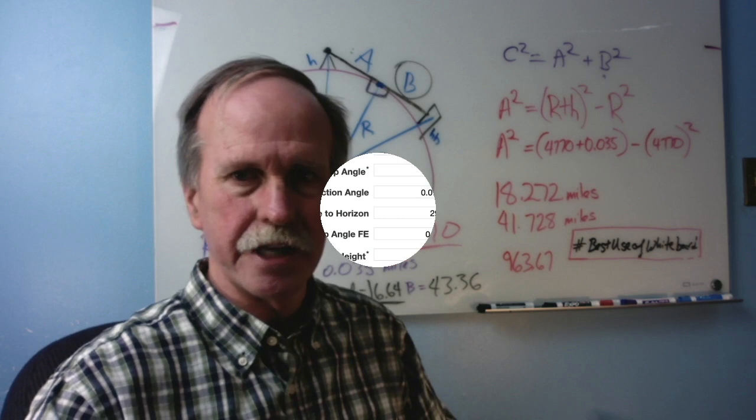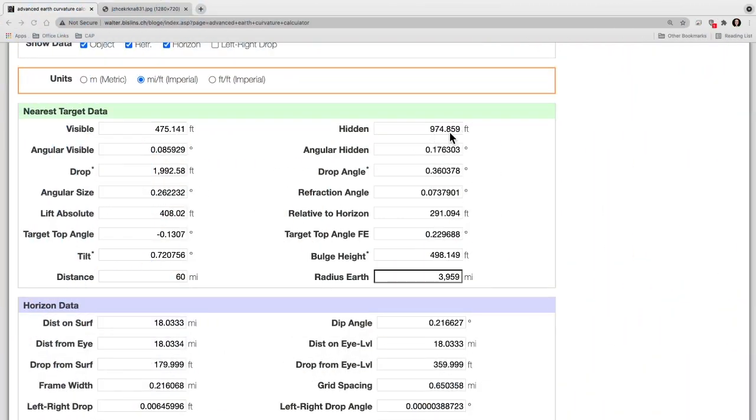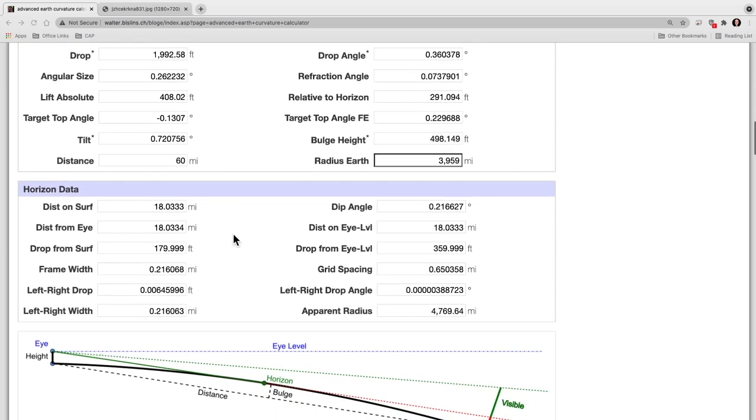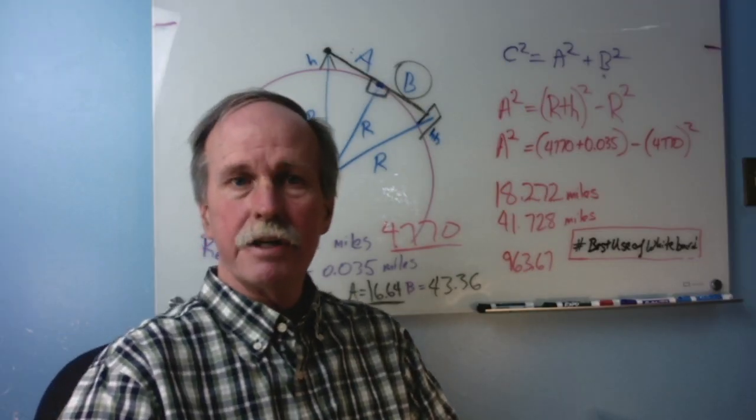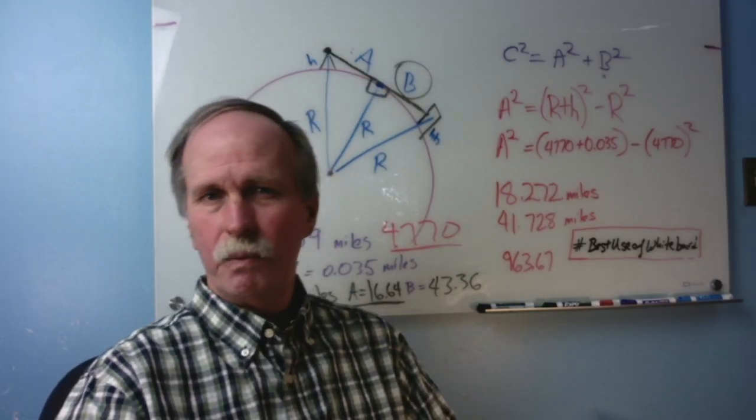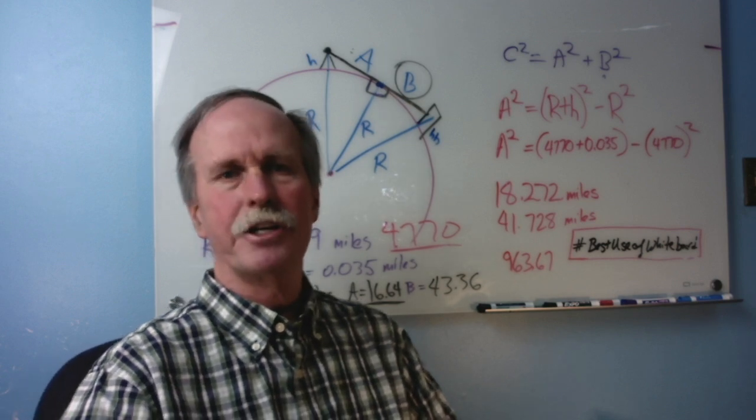Let's see what the curve calculator said. 974.85 feet, about 11 feet more than we calculated. Second, where's the horizon? 18.33 and we got 18.272. Again, very close. So now you know how to use the curve calculator and where these changes for refraction come in.